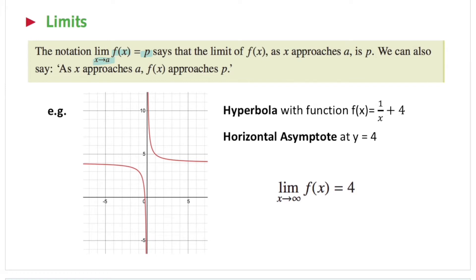Let's take this as an example. Let's say we have a hyperbola with function 1 over x plus 4. You can also see the graph on the left. Clearly, we have a horizontal asymptote at y equals 4, which is here. So that's y equals 4, our horizontal asymptote. We say that as the limit approaches positive infinity, as the notation suggests, then the value of the function, f of x, approaches 4.